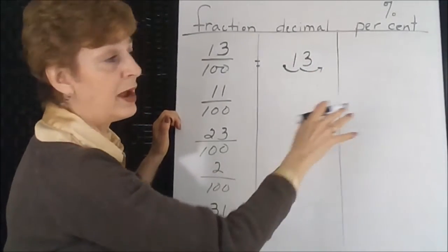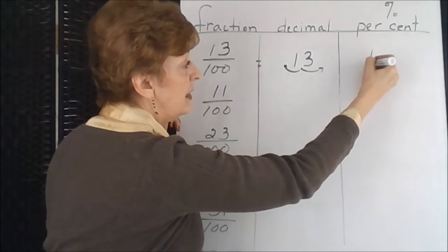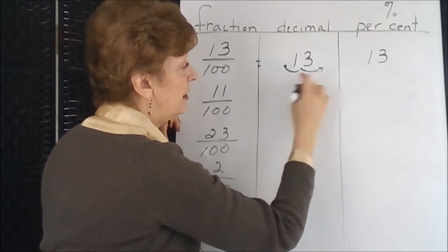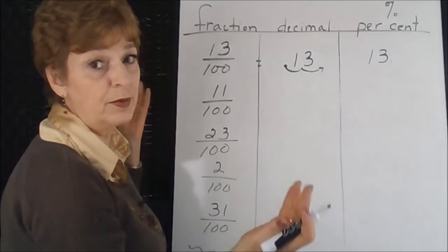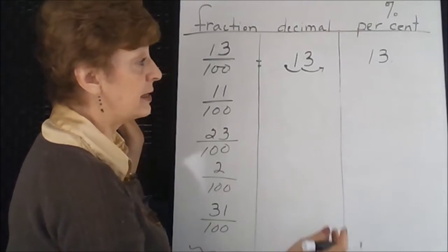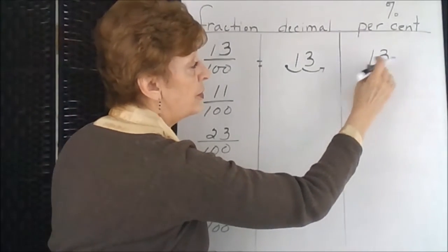And then the 13, what would happen is that the decimal point would move two places to the right. We're going to the right anyway, our next column is to the right. We would take our 13, the decimal point would be here if it was placed, but that would be a whole number so we don't actually have to show it.